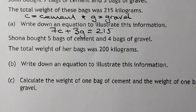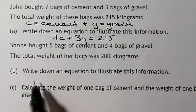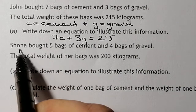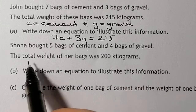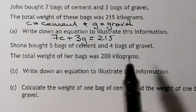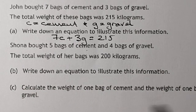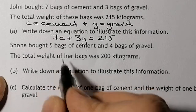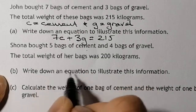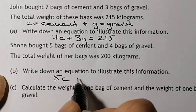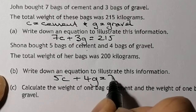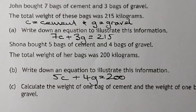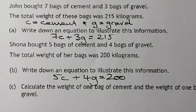Usually with this type of question I've got a second equation to write. For part B, Shona bought five bags of cement and four bags of gravel. The total weight of her bags was 200 kilograms. So 5C plus 4G is equal to 200. That sets me up with two equations, and that would be a mark each for these.